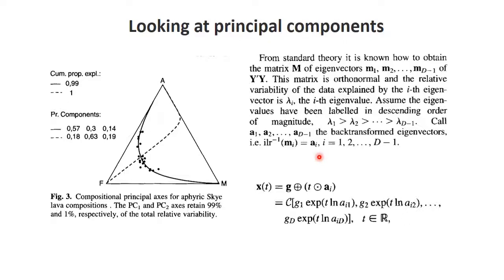We then perform an inverse ILR transformation on those eigenvectors to get vectors in the original composition space, giving us vector a. This allows us to write a composition as a function of the mean plus a variable t times an eigenvector a_i. Under closure, this is equivalent to standard principal component analysis, where a vector is written as a mean plus a linear combination with a principal component vector.